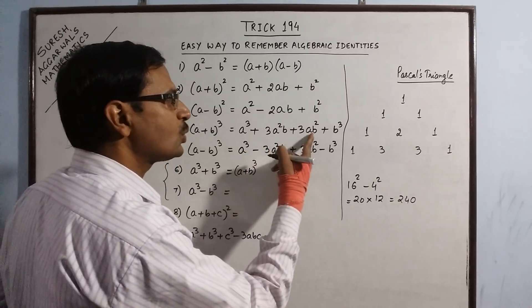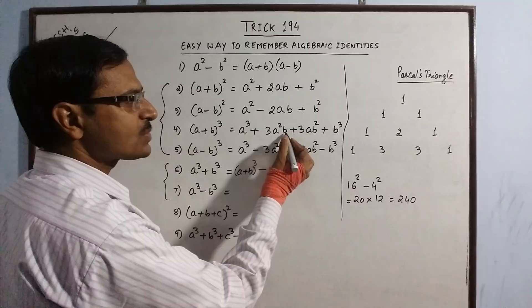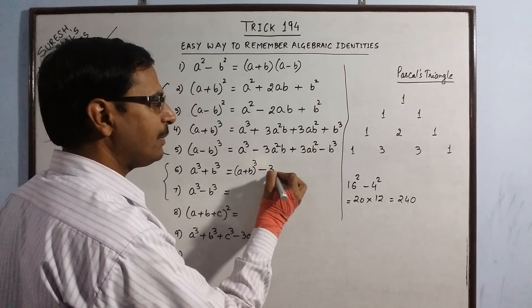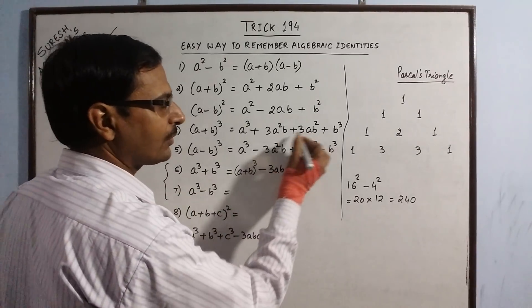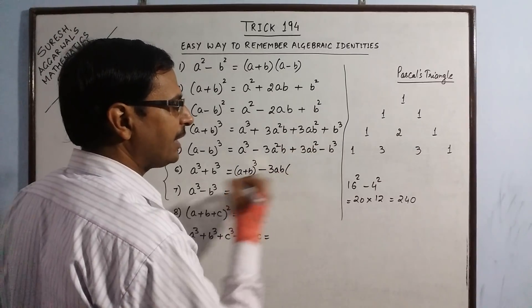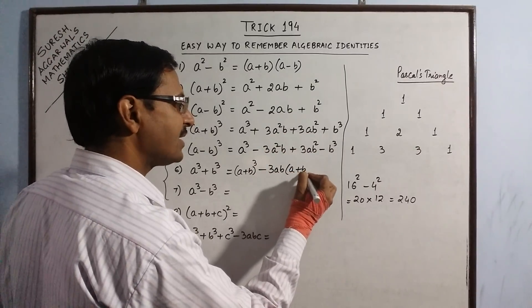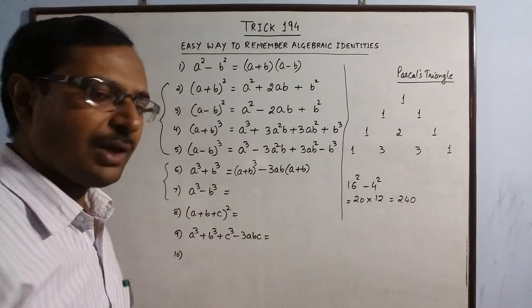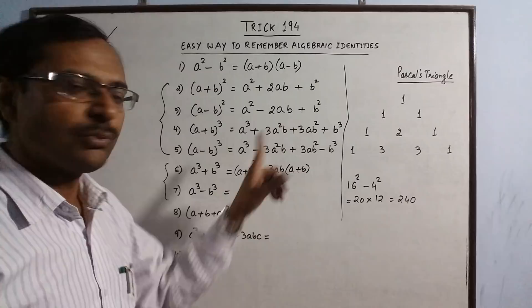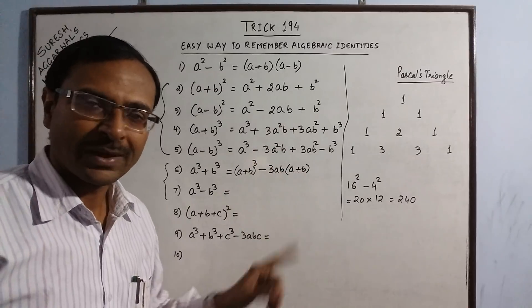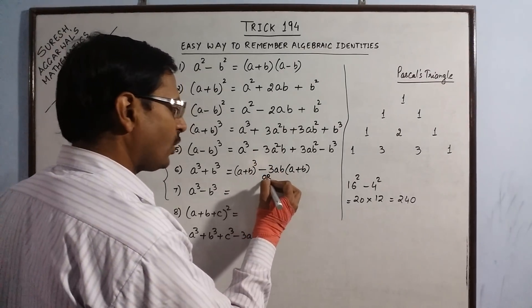In 3A square B and 3AB square, we have 3AB common. The remaining factor is A plus B. So this is the identity for A cube plus B cube, directly derived from identity number 4 by taking A plus B common.